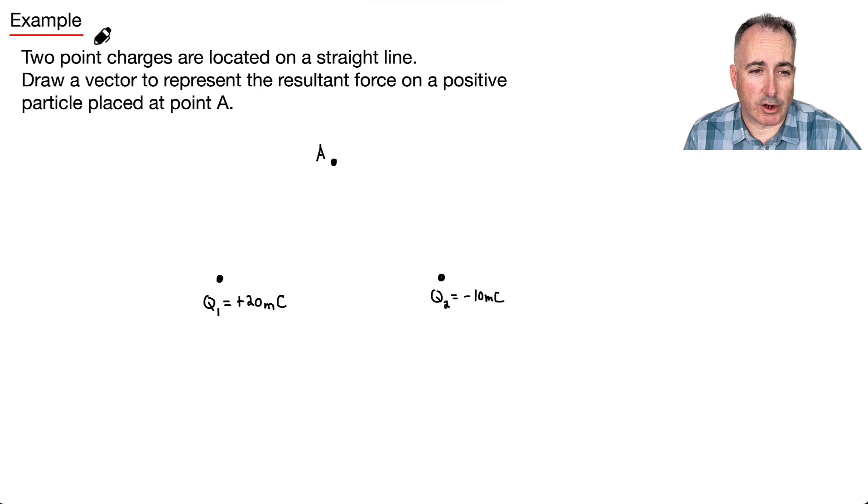We have two point charges. So that means this one right here, Q1, and we have this other one called Q2, and they're located in a straight line. And we're supposed to draw a vector to represent the resultant force that acts on a positive particle placed at point A. So imagine now we have a little plus that we place right here, a positive particle.